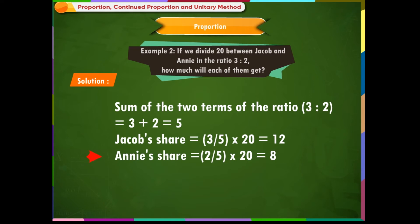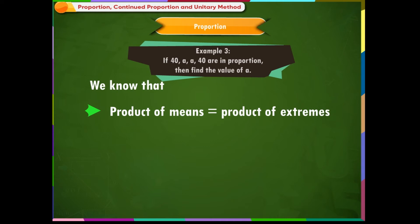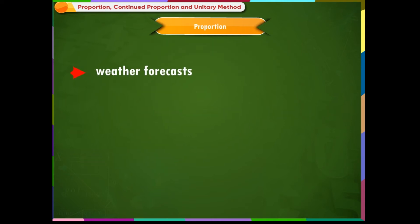Example 3: If 40, a, a, 40 are in proportion, find the value of a. We know that product of means equals product of extremes: a × a = 40 × 40, so a² = 1600, therefore a = 40.